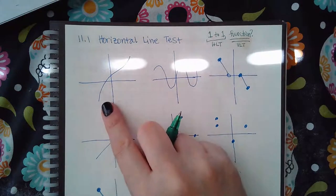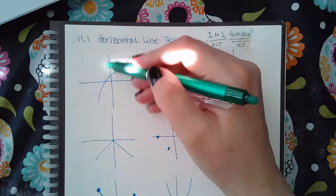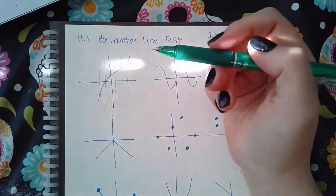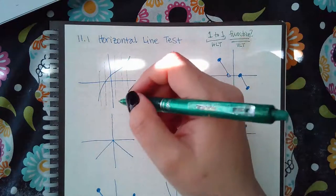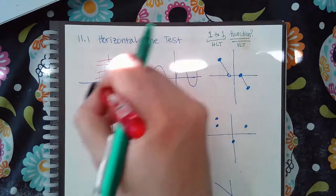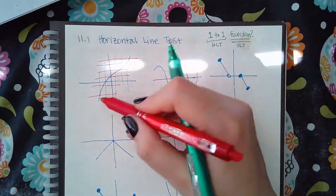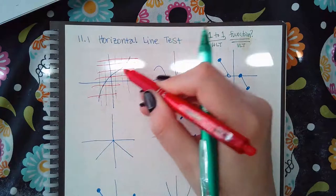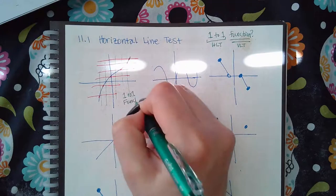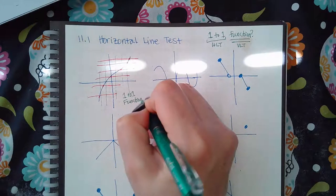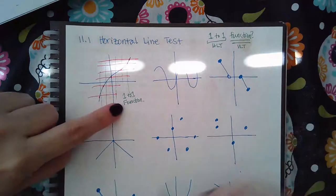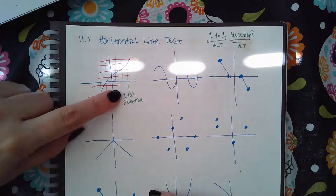For instance, this graph — if I draw a bunch of vertical lines through it, no vertical line crosses more than one time, so this is a function. And when I do the horizontal line test, none of these horizontal lines touches the function more than one time. It passes both the vertical line test and the horizontal line test.